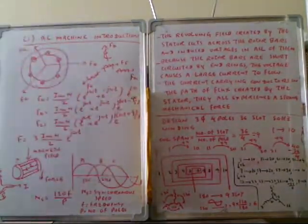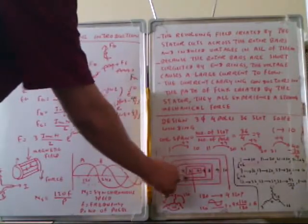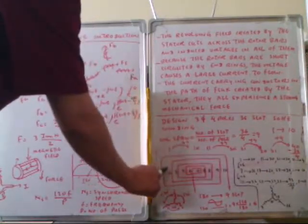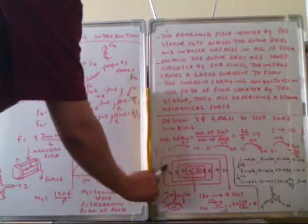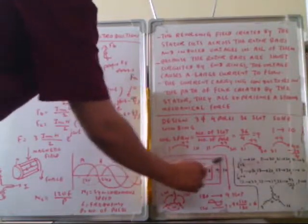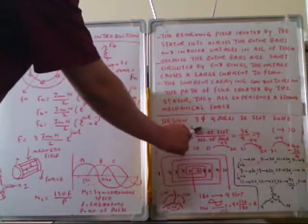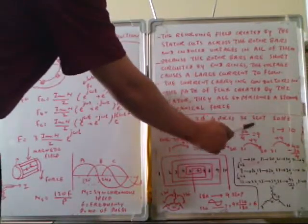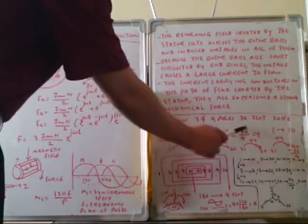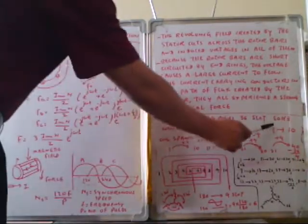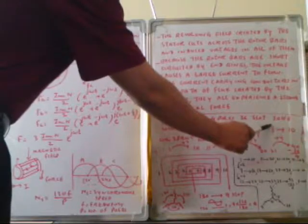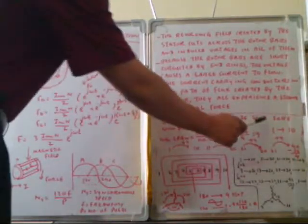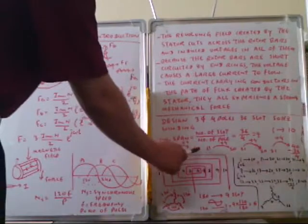Now see this problem. The stator has 4 poles, 36 slots, 50 hertz winding. When we are winding, this is one winding. How many slots will we take here? The span. We have to calculate number of slots by number of poles. So 36 slots divided by 4 poles equals 9. So the slot span is 9. We have to start from slot 1 and end at slot 10. So this is 1 to 10.